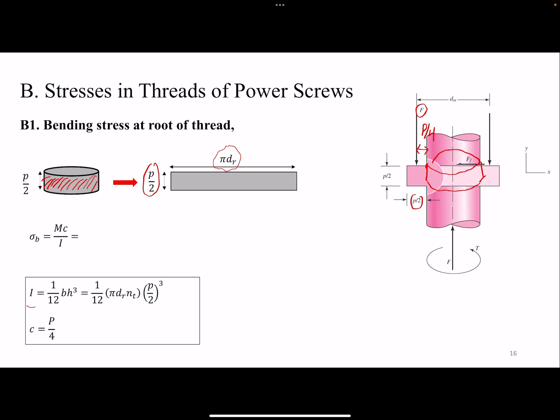Now if we want to form our equation, that would be mc over i. We need to find i. The i of this rectangle is bh cubed over 12. For us, the base is π dr. Here we have an additional term of nt, which is the number of engaged threads. That we will talk about later on, depending on how many threads are engaged. Not all the forces are carried by one thread. There are multiple threads involved in the stress distribution. And h is p over 2 cubed. So if you plug in all the values here and simplify, that's the equation that we have.